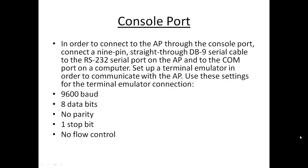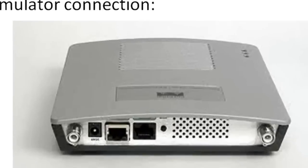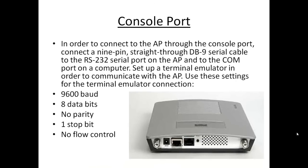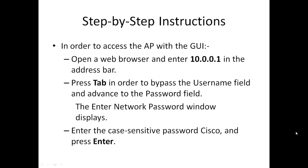Set up a terminal emulator in order to communicate with the access point with the following parameters. If the device is not accessible after these settings, make sure the access point is in default status. To access the access point via GUI, assign an IP address to the device before connecting through the GUI, or obtain an IP address through DHCP. In this example, we use the 1200 series access point, and a console login configures it with a static IP address of 10.0.0.1.